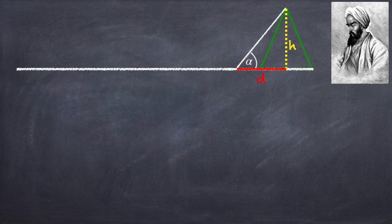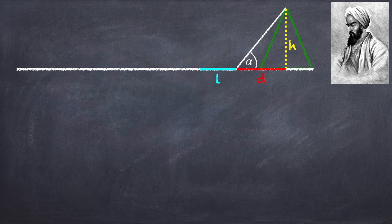Then you walk back some distance l. This time you measure this distance. And again you measure the angle to the top of the mountain, which we're going to call beta.